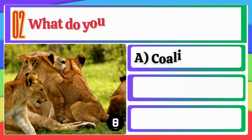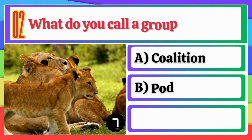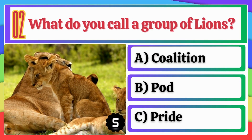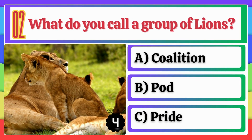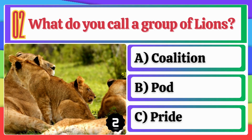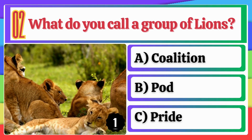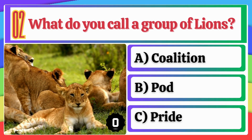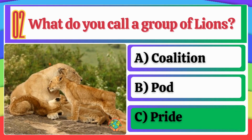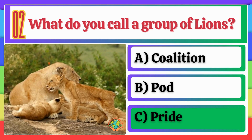What do you call a group of Lions? A. Coalition. B. Pod. C. Pride. A group of Lions is called a Pride.